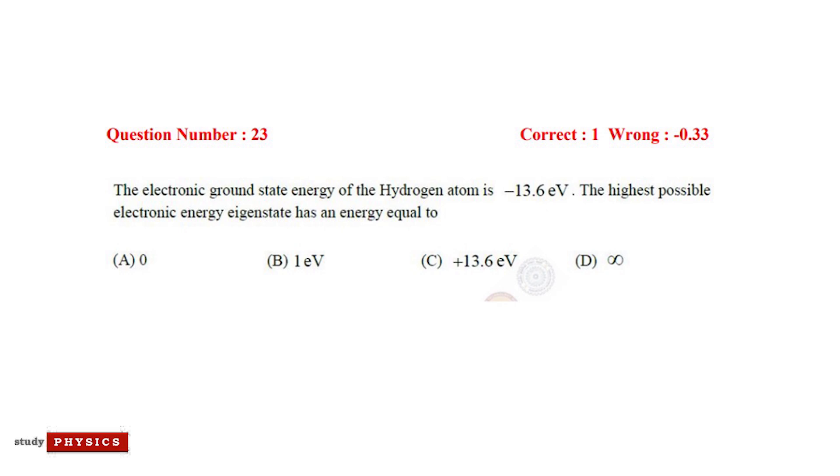The electronic ground state energy of the hydrogen atom is minus 13.6 electron volt. The highest possible electronic energy eigenstate has an energy equal to: (A) 0, (B) 1 electron volt, (C) plus 13.6 electron volt, and (D) infinity.